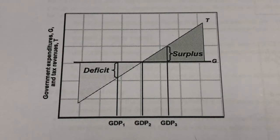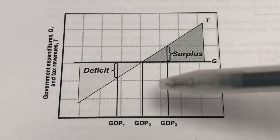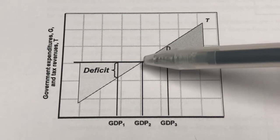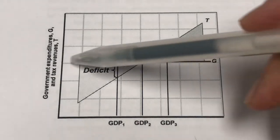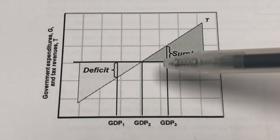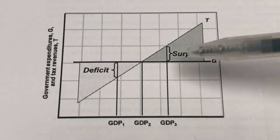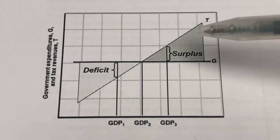Let's understand how this built-in stabilizer works. Starting at our initial point, GDP2, we're experiencing a balanced budget because the amount of G is exactly the same as the amount of T. Now, let's say a recession happens. During recession, there will be a fall in spending in the economy overall.